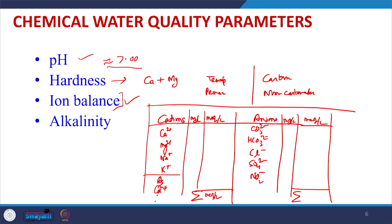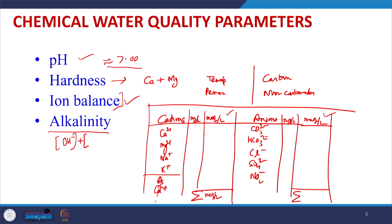Once all cation and anion concentrations are determined in milliequivalents per liter, we can determine many other parameters related to irrigation and other applications. The determination of alkalinity is another important chemical water quality parameter. Alkalinity does not measure only OH⁻ concentration — it measures all ionic species that can neutralize H⁺ ions when acid is added to the water, including carbonate and bicarbonate ions.